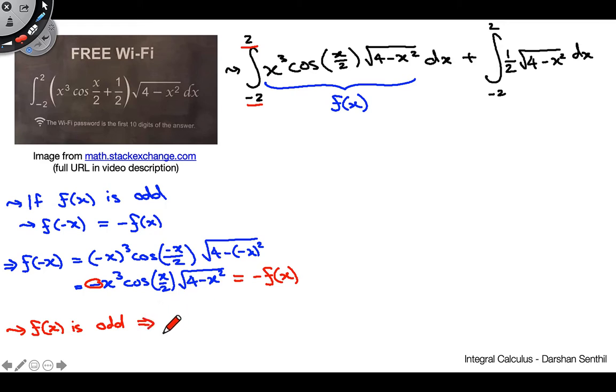Because of this, we can conclude f of x is in fact odd. And so therefore, the integral from negative 2 to 2 of f of x dx is going to equal 0. Which is really nice, right? Because this really, really complicated thing here now just ends up being 0, which is honestly just super cool.